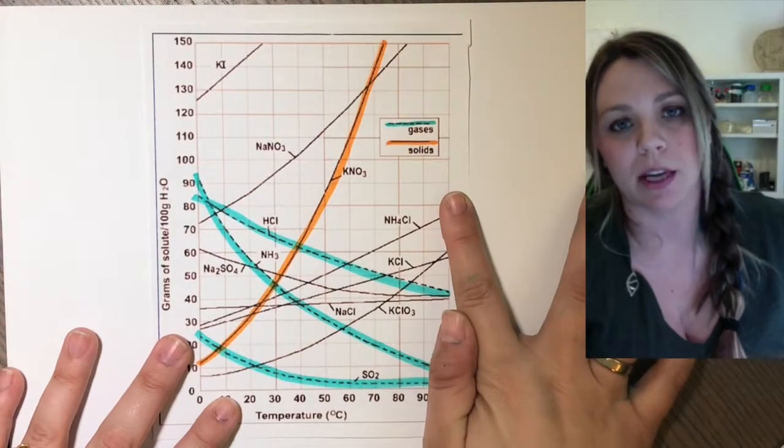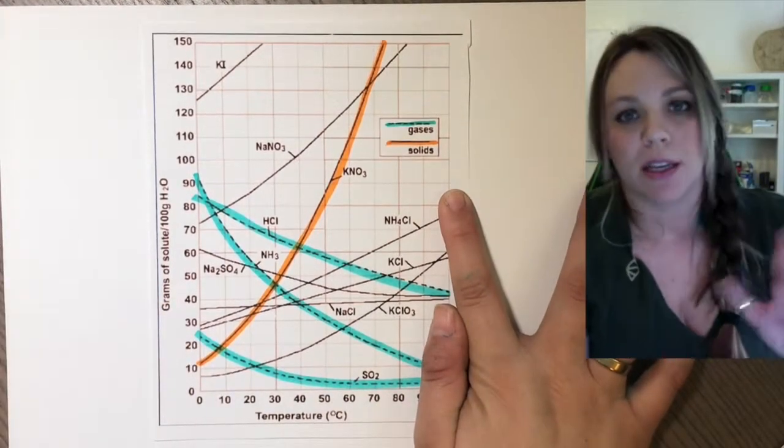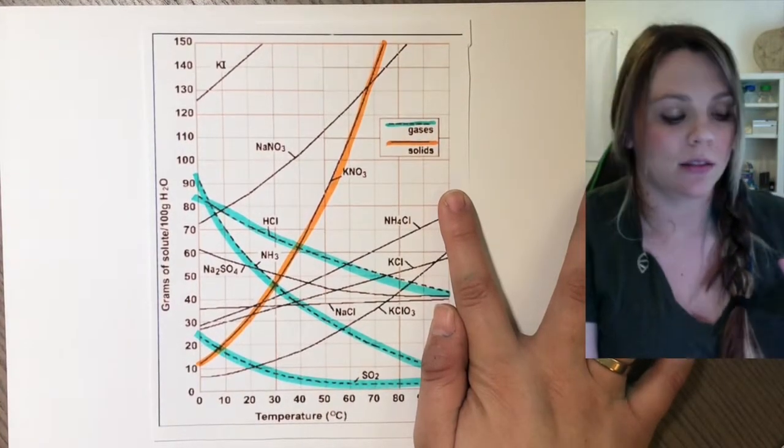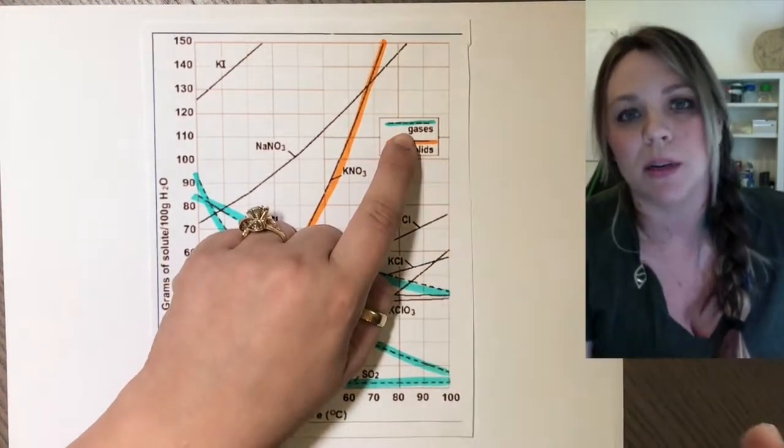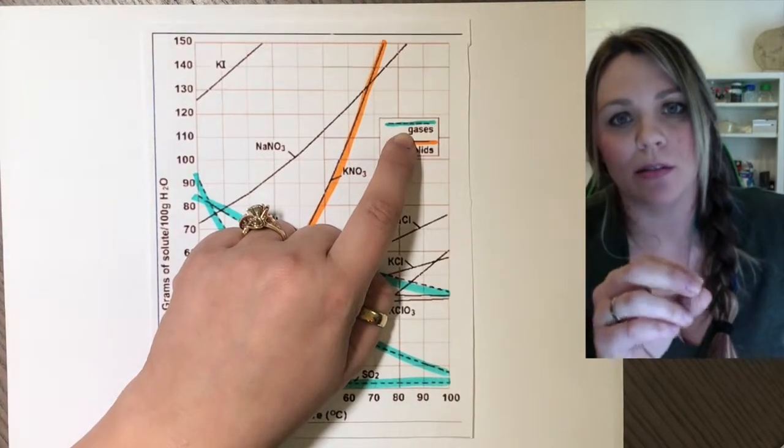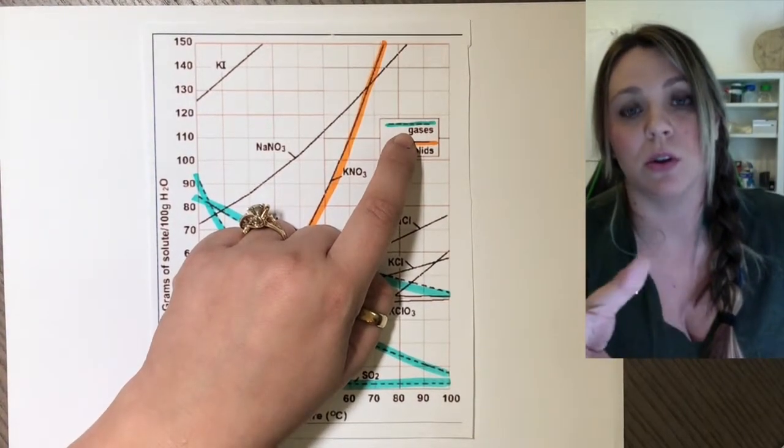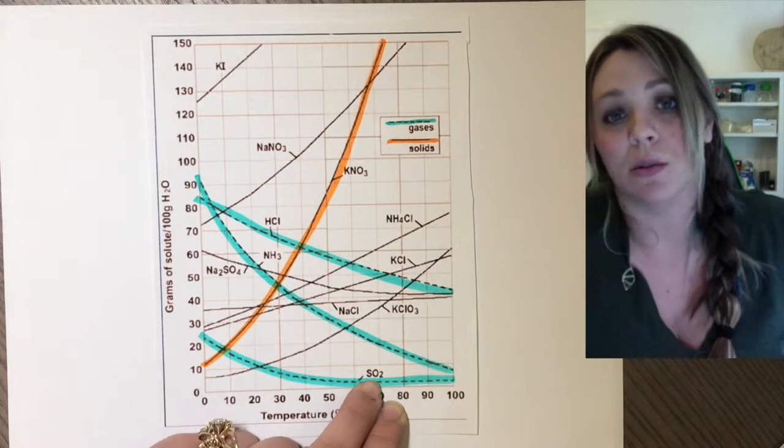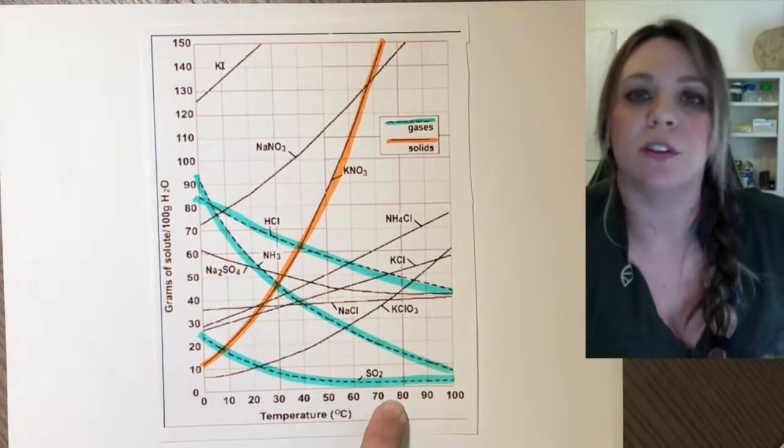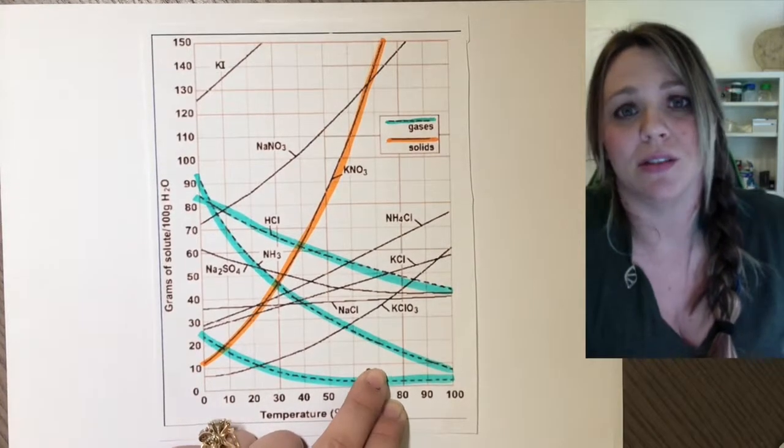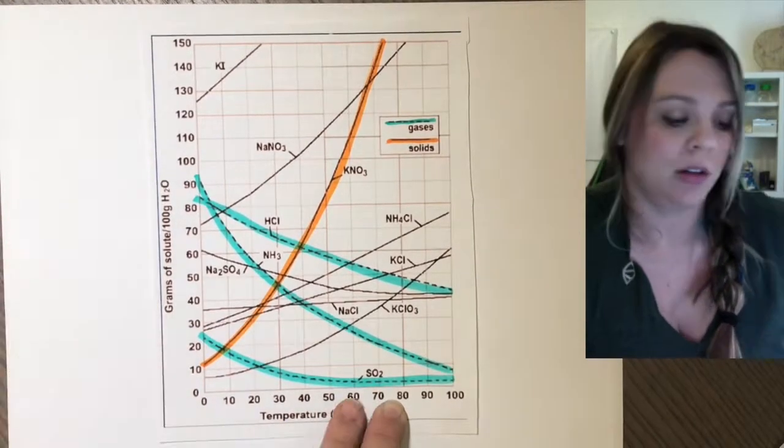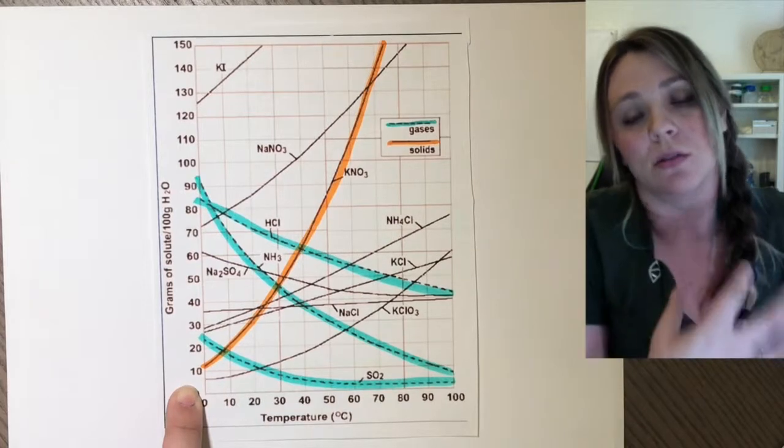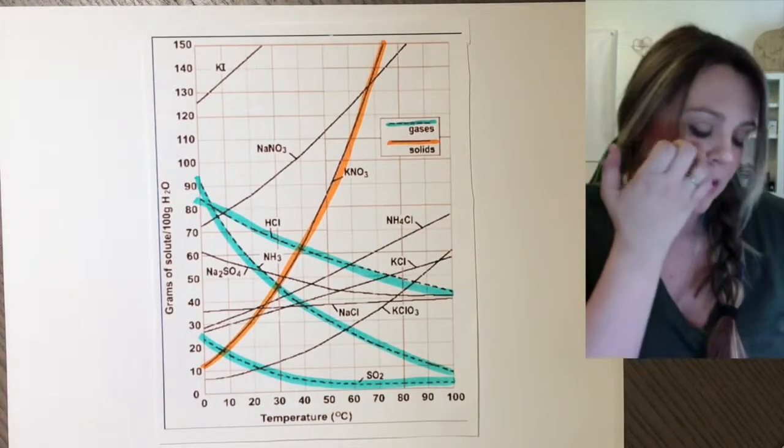This actually has some really interesting practical applications. For example, no one likes drinking a hot Diet Coke or hot Pepsi. There's actually a really good reason why. The gas that's dissolved - it's a carbonated drink - you actually have a gas that's dissolved into your soda to make it carbonated. The hotter it gets, the less carbonation that's going to be dissolved in your drink. Your drink is going to feel flat because less of that carbonation is dissolved in it. Colder beverages have a higher concentration of that carbonation in it, so you like it more, typically.